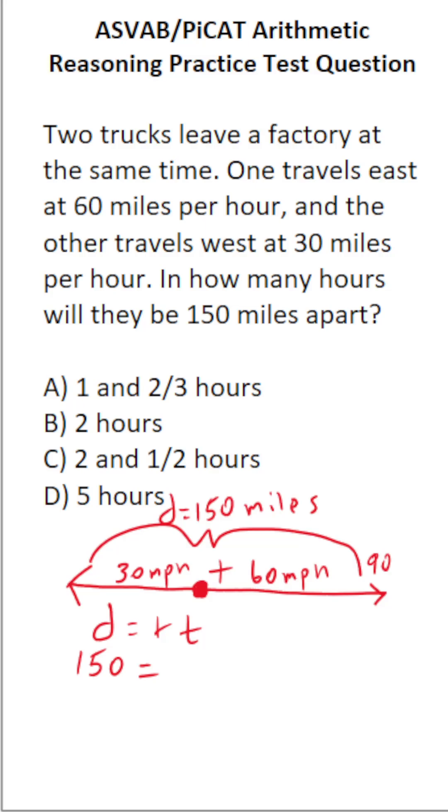So our rate is going to be their combined rate of 90 miles per hour, and we're going to be solving for T. In how many hours will they be 150 miles apart? To solve for T, we're going to divide both sides by 90. In doing so, this crosses out, leaving us with T on this side.